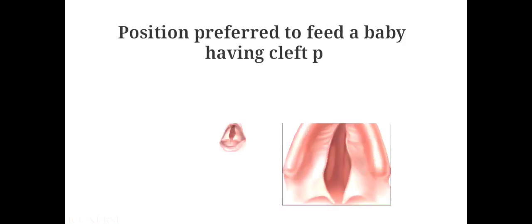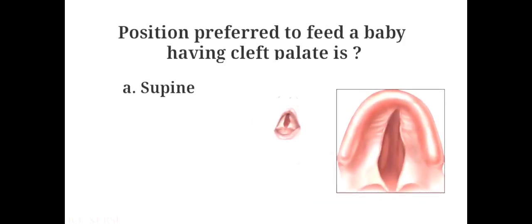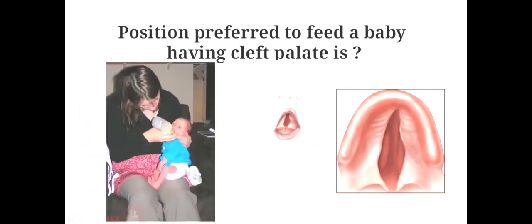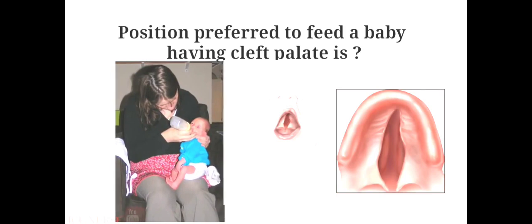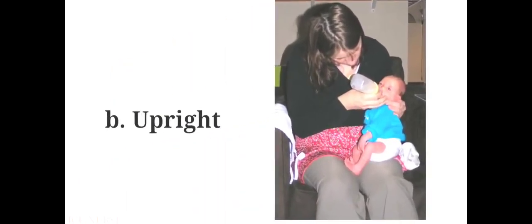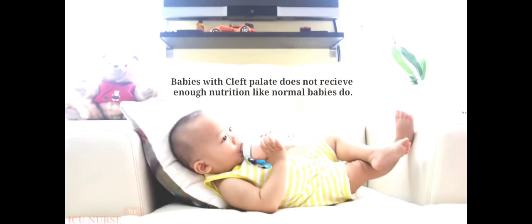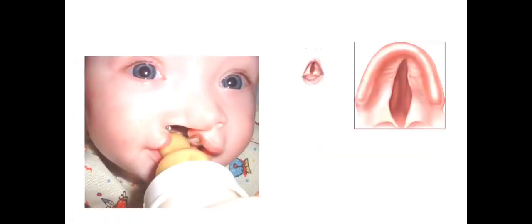The position preferred to feed a baby having cleft palate is: A. Supine position, B. Upright position, C. Prone position, D. Side lying position. The answer is B. Upright position. The most immediate concern for a baby with cleft palate is good nutrition. Sucking is difficult because of the poorly formed roof of the mouth. Holding the infant in an upright position will prevent food from coming out of the nose.